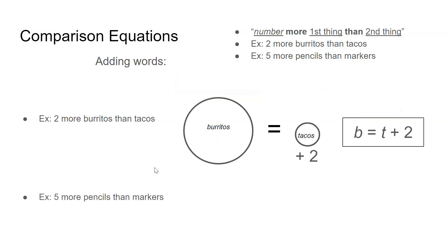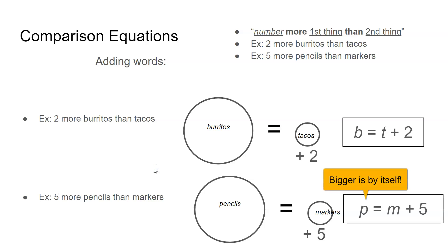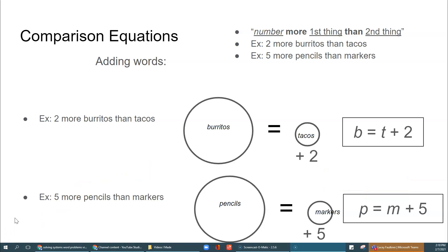What if I have five more pencils than markers? Well, if I have more pencils, pencils is bigger. So how would markers need to grow? Markers would need to grow by adding five. So P equals M plus five. Pencils equals markers plus five.